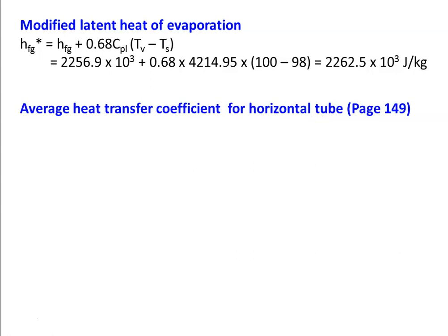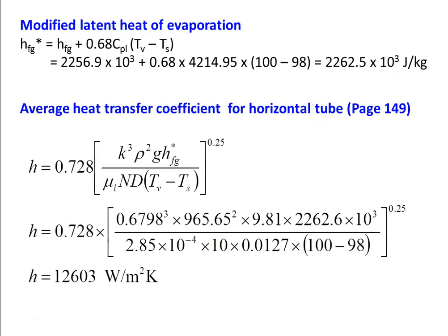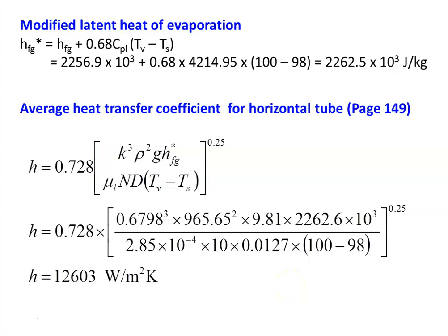The average heat transfer coefficient for horizontal banks of tubes uses page 148, equation number 3. The only difference from the single horizontal tube equation is that the denominator includes capital N — the number of arrays of tubes. The correlation is H = 0.728 × [K³ × ρ² × g × HFG*] / [μ × N × D × (Tv − Ts)]^0.25. Substituting all values and calculating, HE = 12603 W/m²·K.